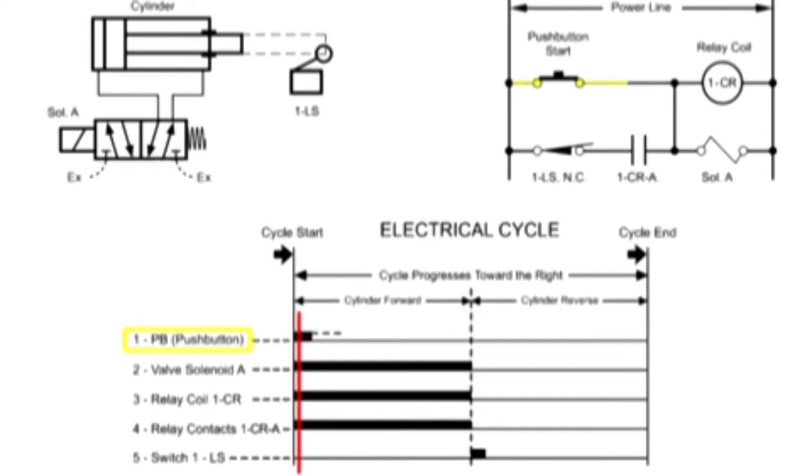When the push button is depressed, the relay coil and the valve solenoid immediately become energized, as shown on lines 2 and 3. Now that the relay coil is energized, relay contact 1CRA closes and also becomes energized as indicated on line 4.